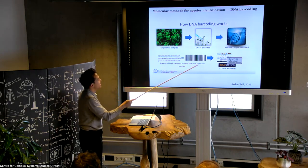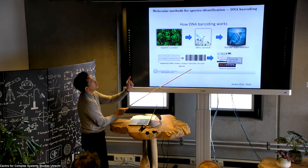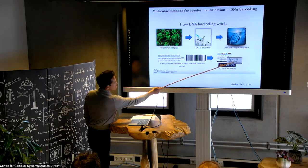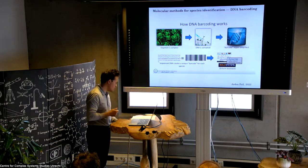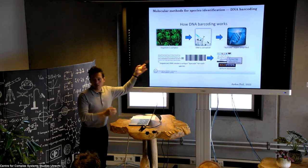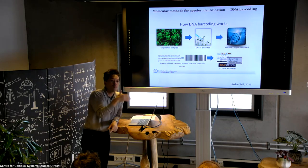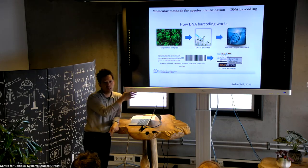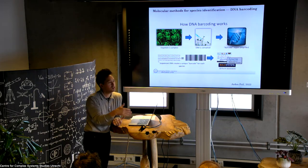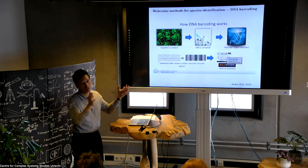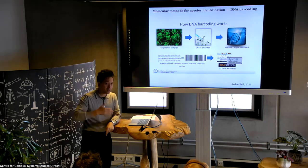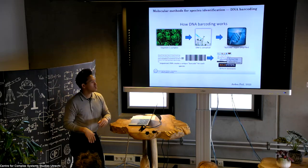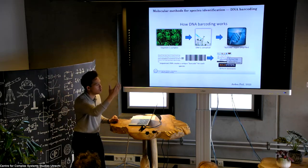Once you have that barcode, you compare it against publicly available databases — two popular ones are BOLD and GenBank. You input a text string of your base pairs, compare it to the database, and if the organism has been sampled before, you should get your species identification. If no one has done this before, you can build a database yourself and upload your findings. If you're sampling from a very well-understood organism, you can just upload the barcode and see what results you get.